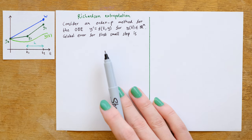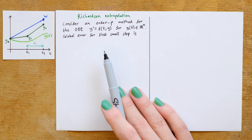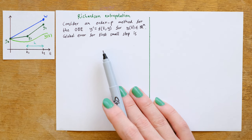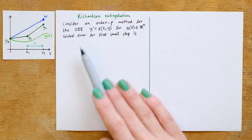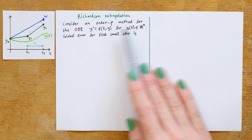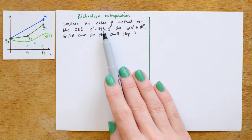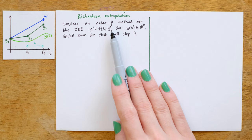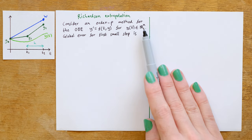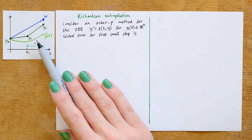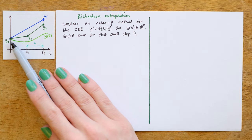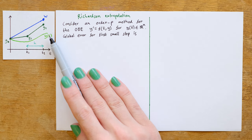Let's now look at Richardson extrapolation, which is a general technique that we can use for estimating the error associated with a numerical integration method. Let's consider an order p method for the ODE y prime is equal to f of t and y, where y is an n-dimensional vector. Richardson extrapolation is based on the picture shown in this diagram. We have our true mathematical solution, y of t.